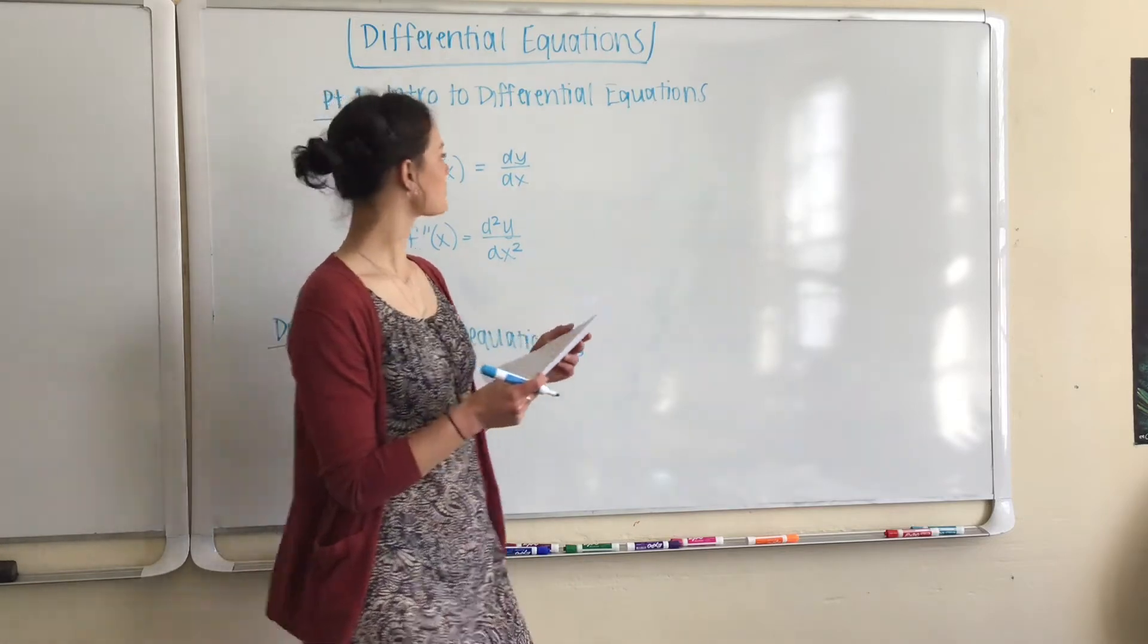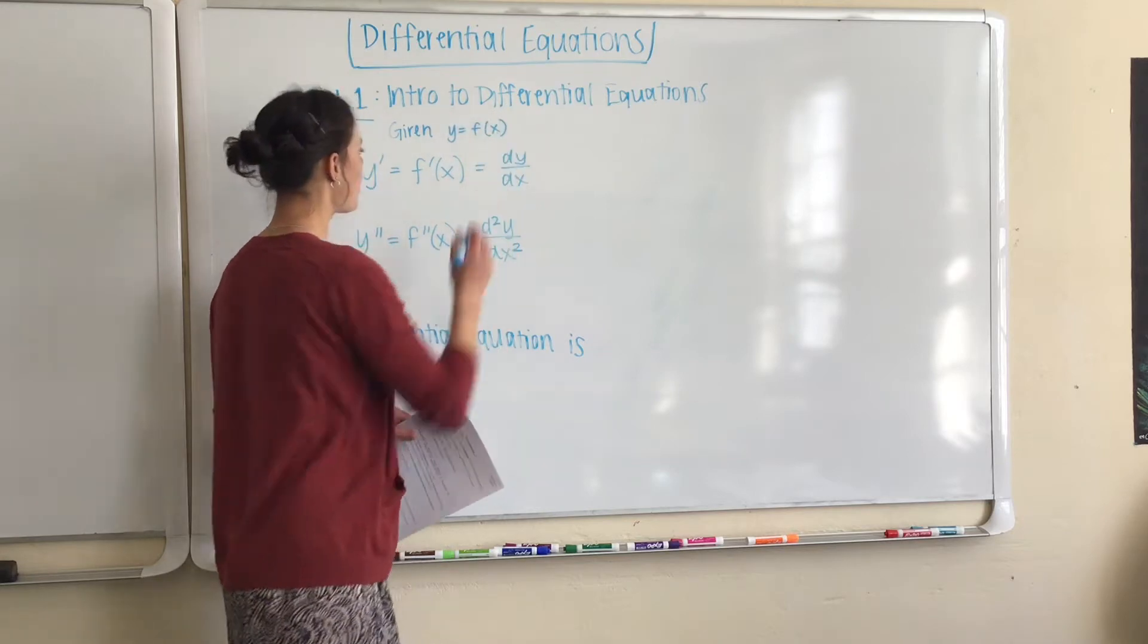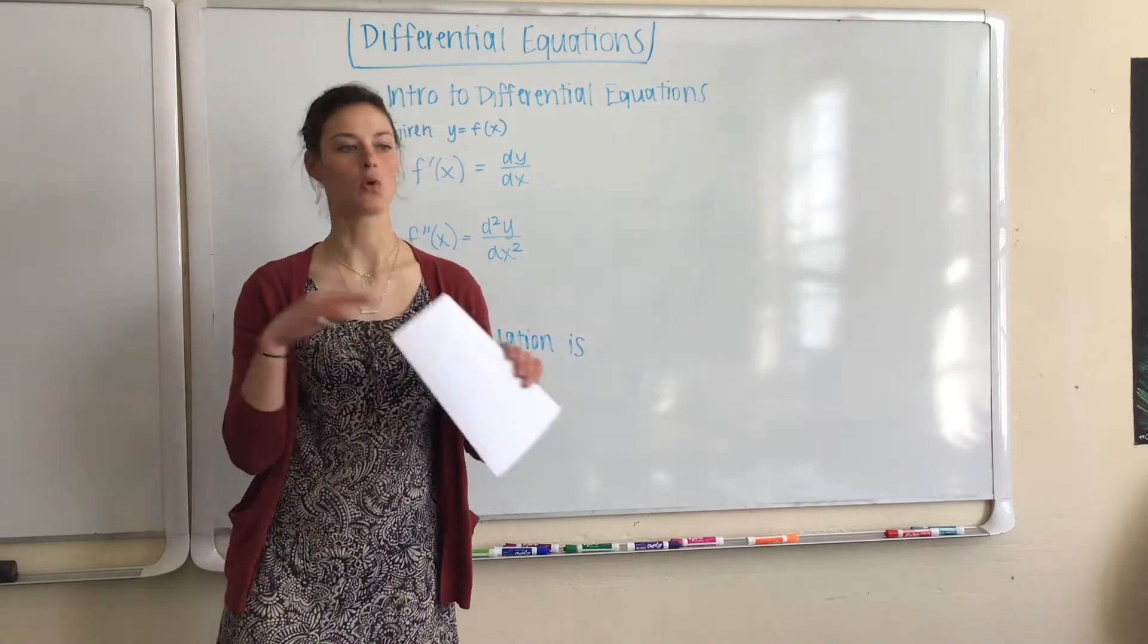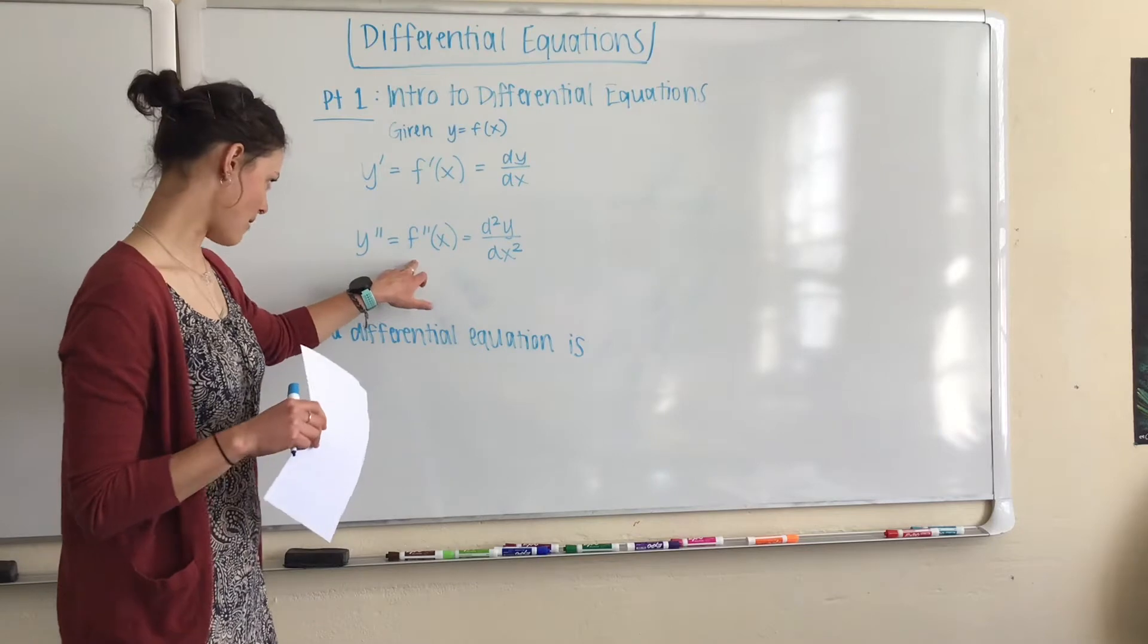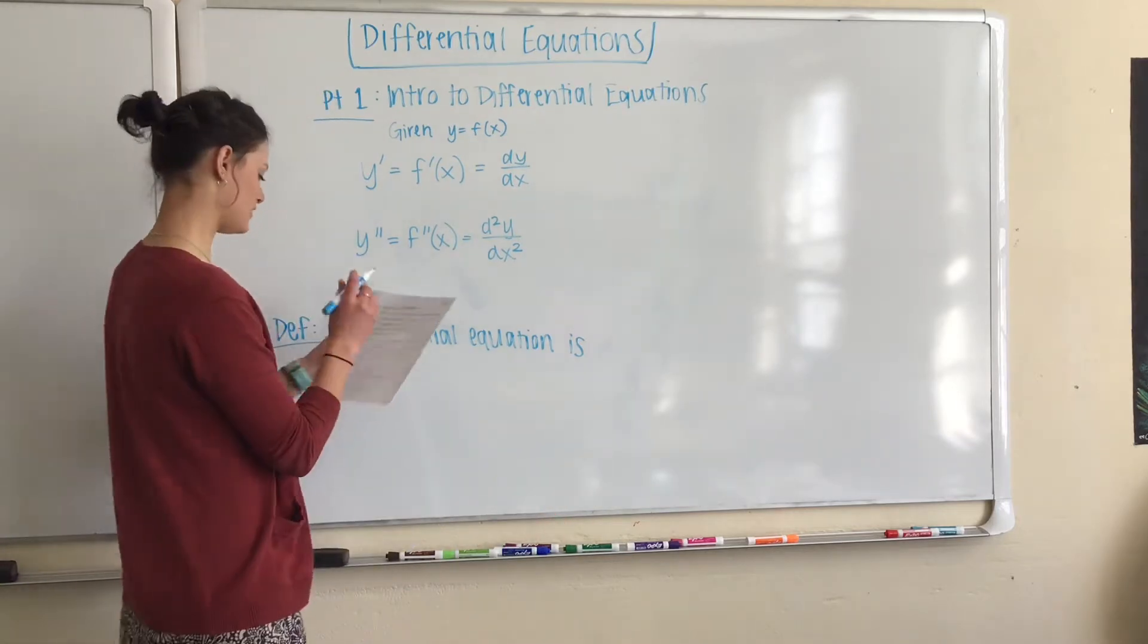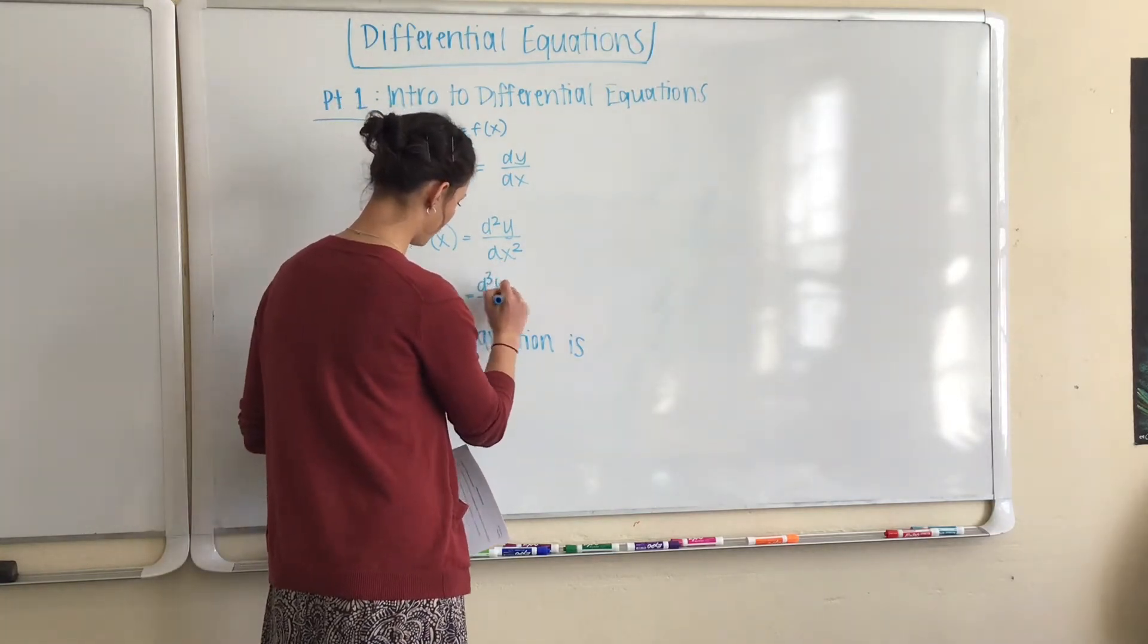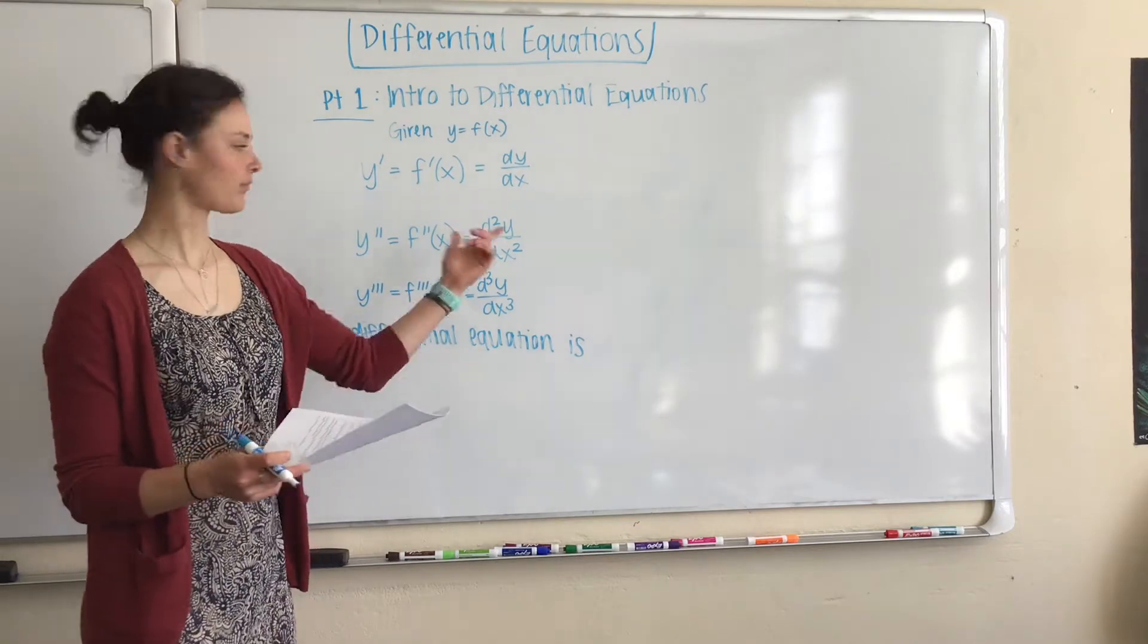So given y equals f(x), we know that y prime is the same thing as f prime of x, which is the same thing as dy/dx. All referring to the first derivative. And then the second derivative is y double prime, f double prime of x, d²y/dx². And then this little blank there is trying to get you at the third derivative, which is going to be y triple prime, which is the same thing as f triple prime of x, which is the same thing as d³y/dx³. So old derivative notation.